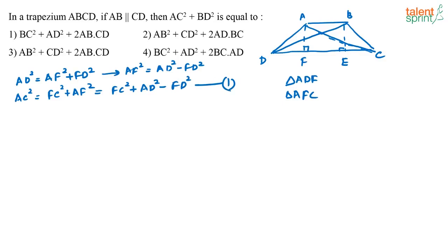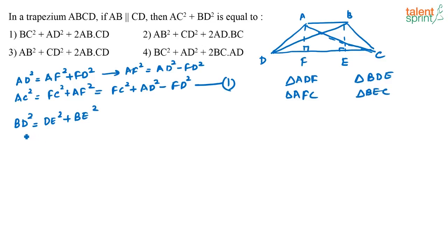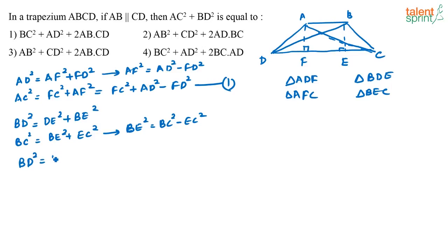Similarly, if I consider triangle BDE, using Pythagoras theorem I can say BD squared equals DE squared plus BE squared. Then if I consider triangle BEC, BC squared equals BE squared plus EC squared, so BE squared equals BC squared minus EC squared. Substituting, BD squared equals DE squared plus BC squared minus EC squared.